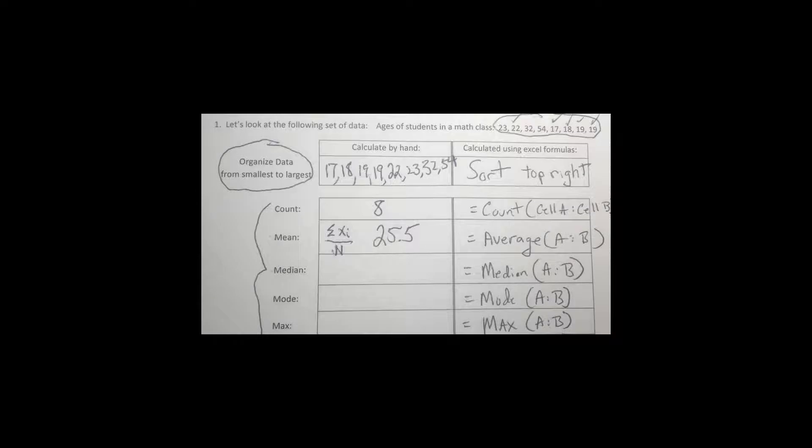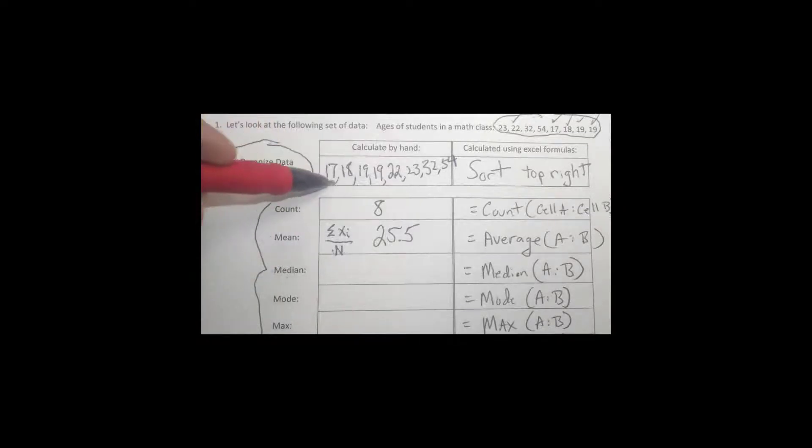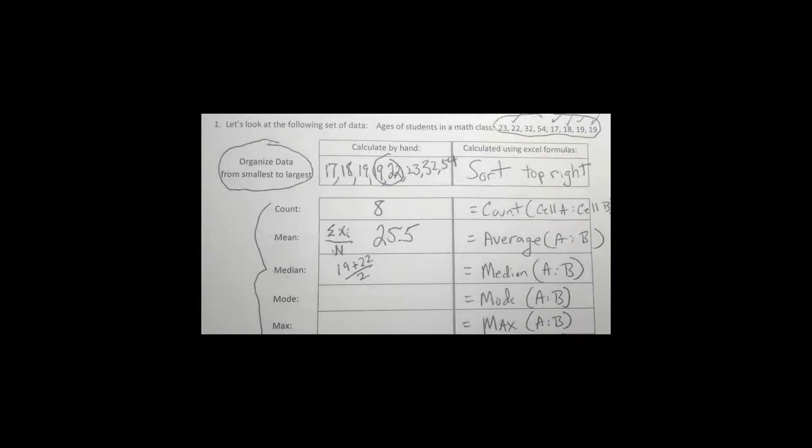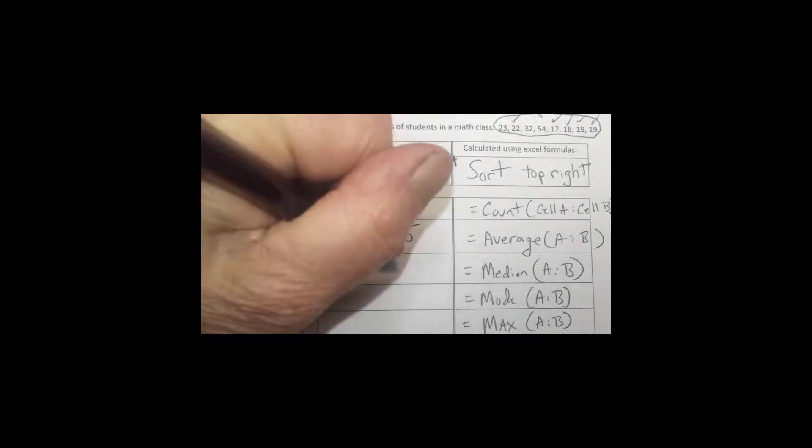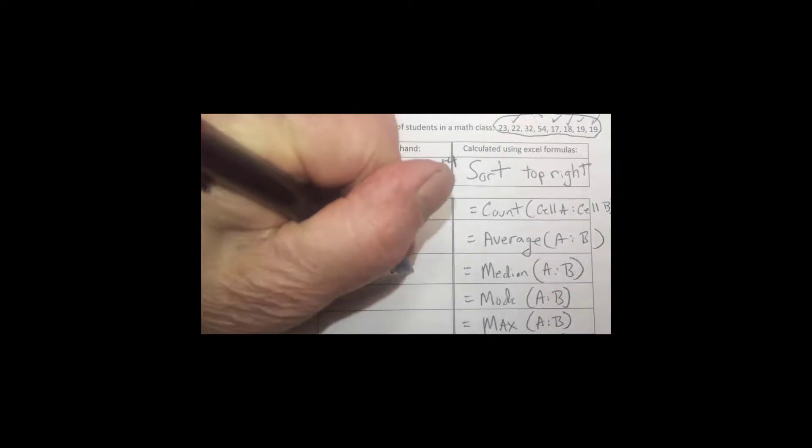The median is the one in the middle. This data set actually has two in the middle: 19 and 22. When you have two in the middle, you find the average between them. So that's 19 plus 22 divided by 2, which gives us 41 divided by 2, which is 20.5.